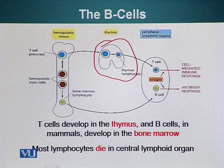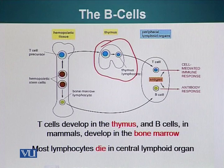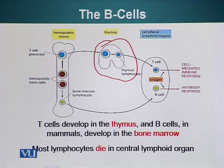By education, I mean B cells that recognize and try to respond to self-antigens must be destroyed, because that army of B cells is trained to destroy parts of our own body. That is where education takes place. One key point: maturation of B cells is antigen independent.